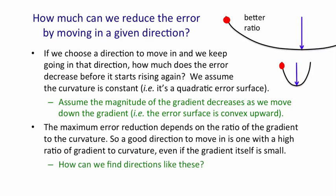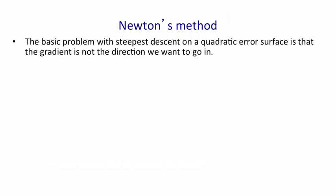The question is, how can we find directions like that second one — directions in which, even though the gradient may be small, the curvature is even smaller?